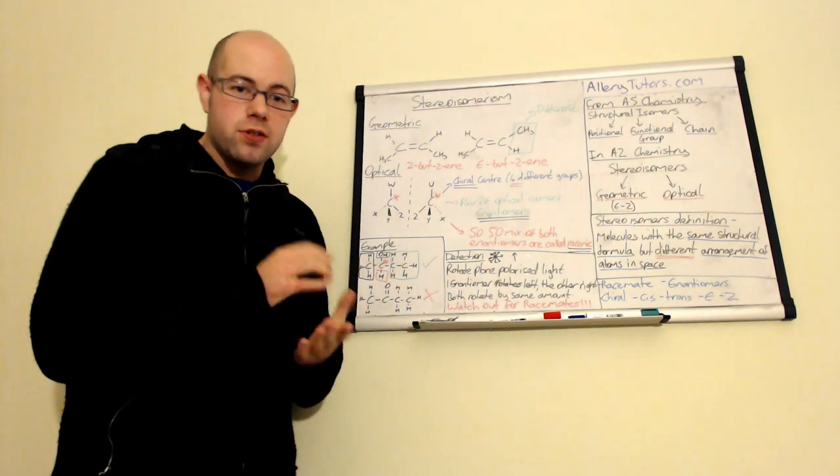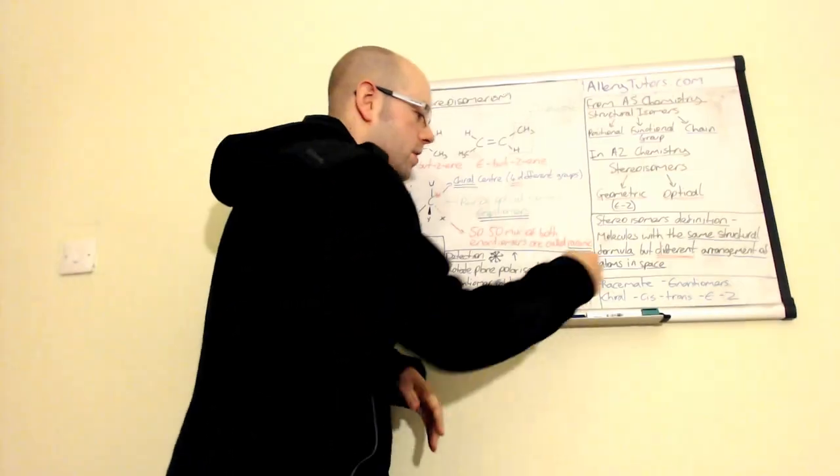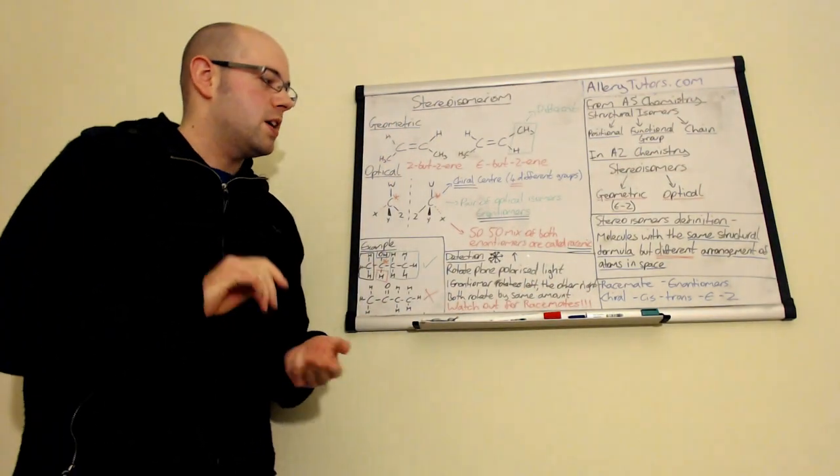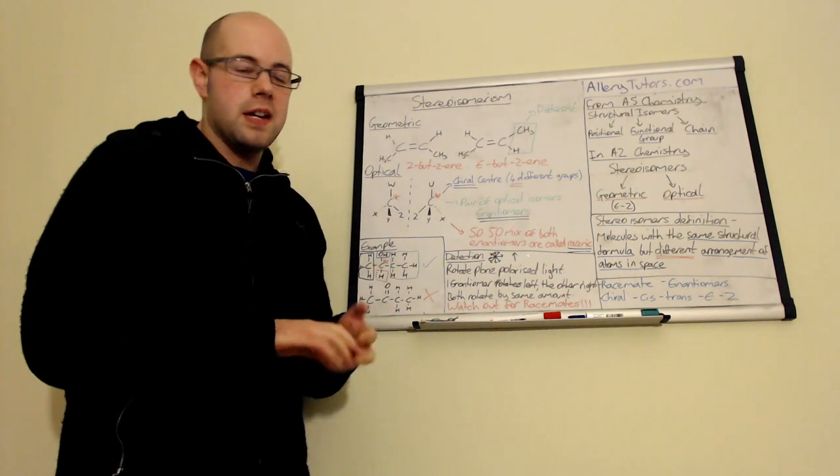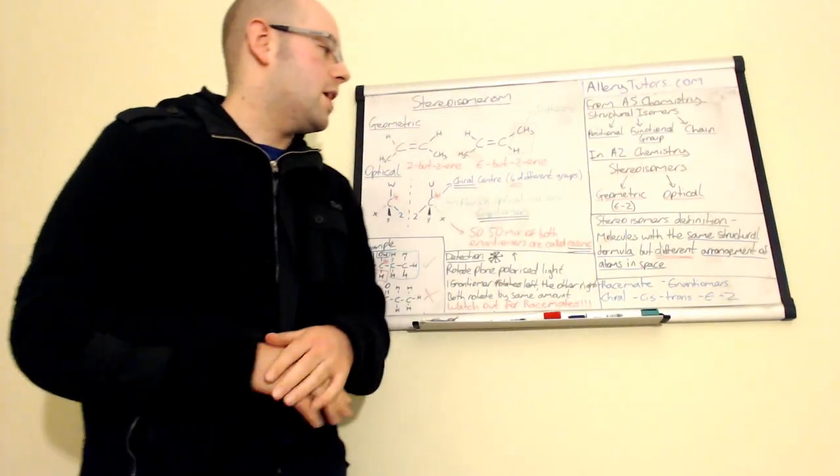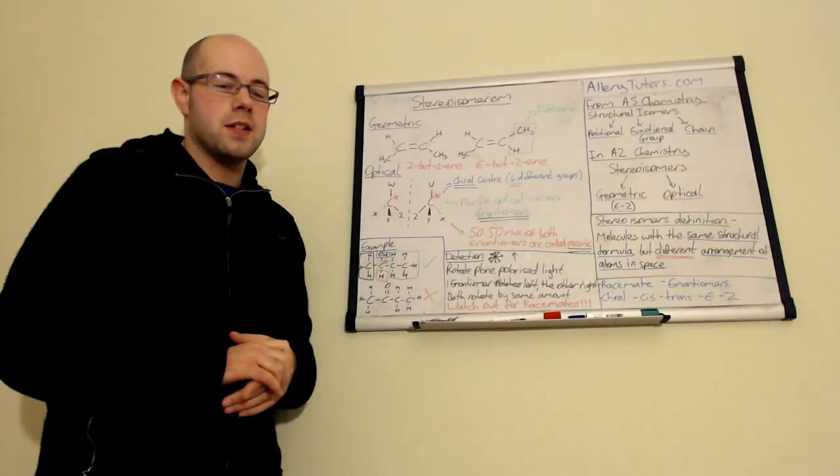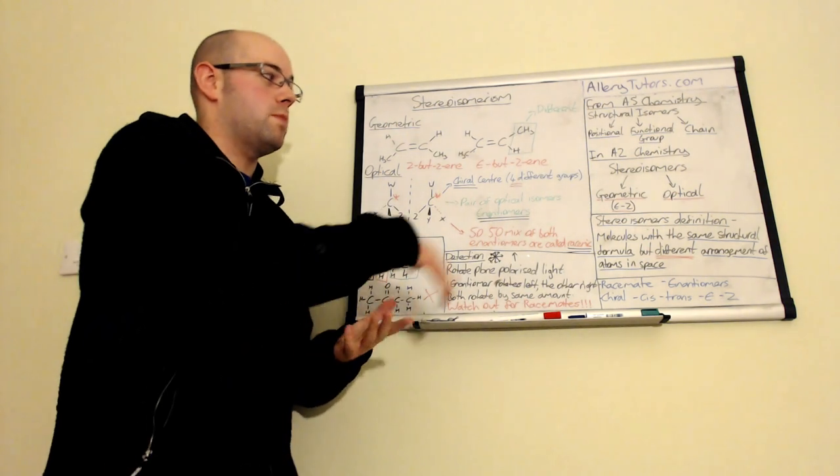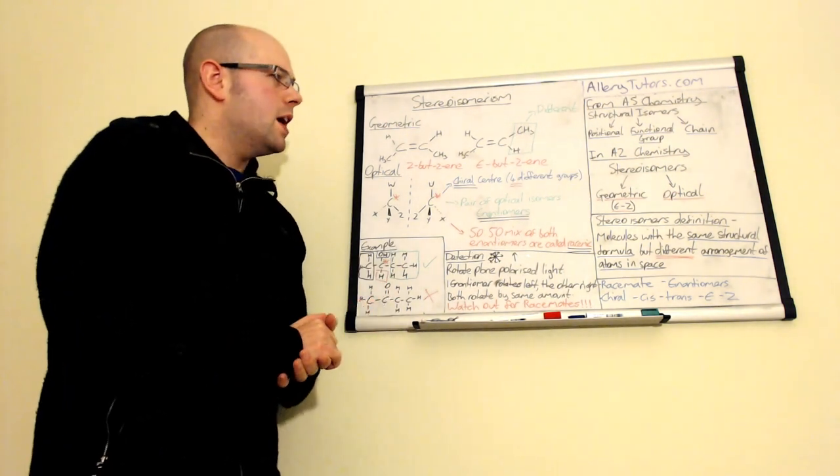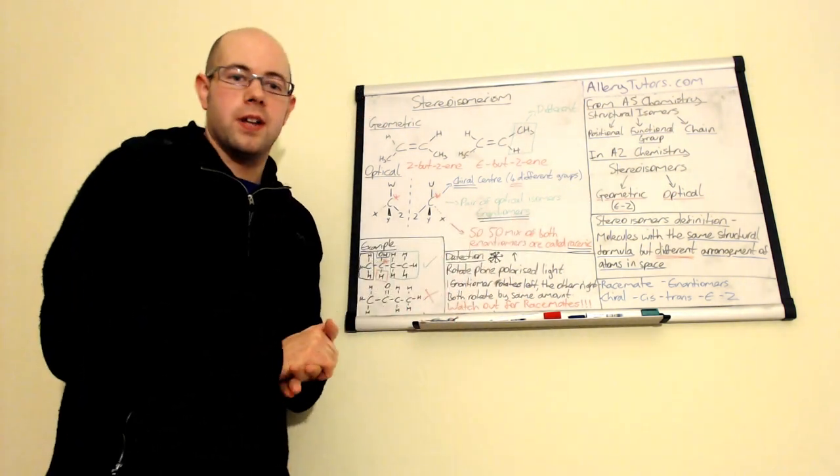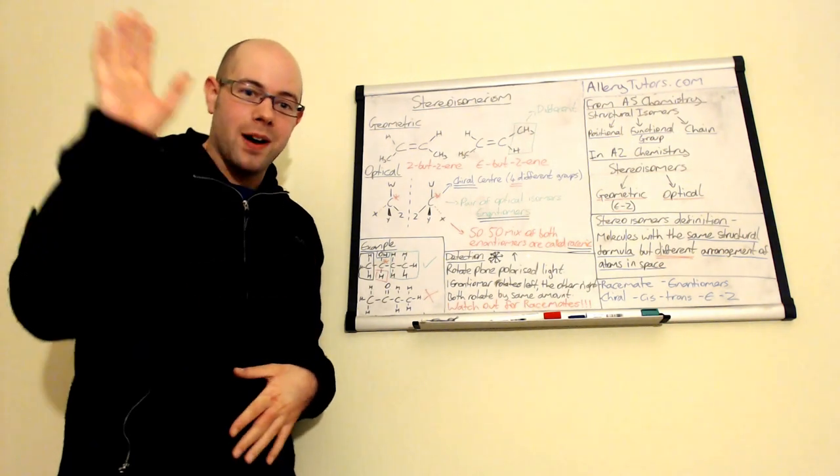And that's pretty much it really. So just make sure that you know your keywords, which are racemate, enantiomers, chiral, cis, trans, E-Z. And these two are very similar. You can use cis or trans or E-Z, and they both mean the same thing, although all of them mean the same thing. And just make sure you know your definitions. And that's it. Hope that helps. Bye.